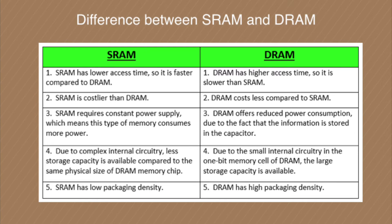DRAM offers reduced power consumption due to information being stored in capacitors. Due to the complex internal circuitry of SRAM, less storage capacity is available compared to the same physical size of a DRAM memory chip.